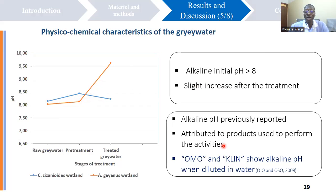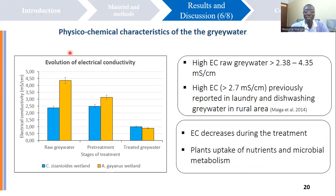This high pH value can be attributed to the products used to perform the activities. Indeed, some detergents used at the sites, like Omo and Plein, have been shown to produce an alkaline pH when diluted in water. The electrical conductivity of raw water was also high, but it decreased during the treatment to values lower than 1,000 microsiemens per centimeter. This decrease can be explained by the plants' uptake of nutrients and microbial metabolism.